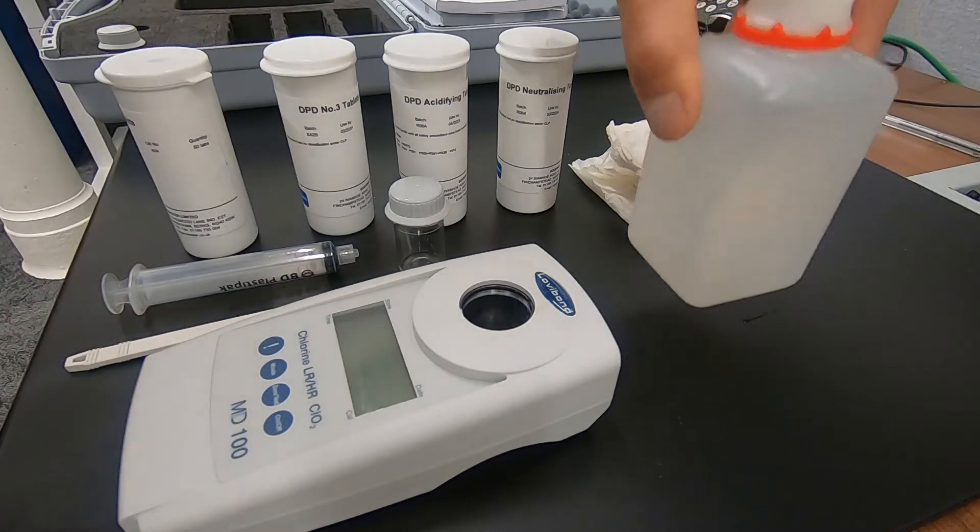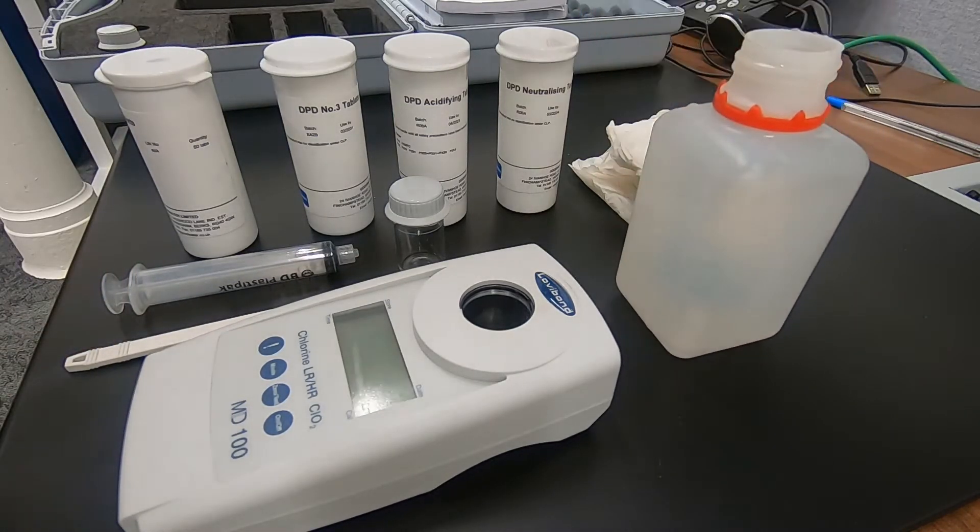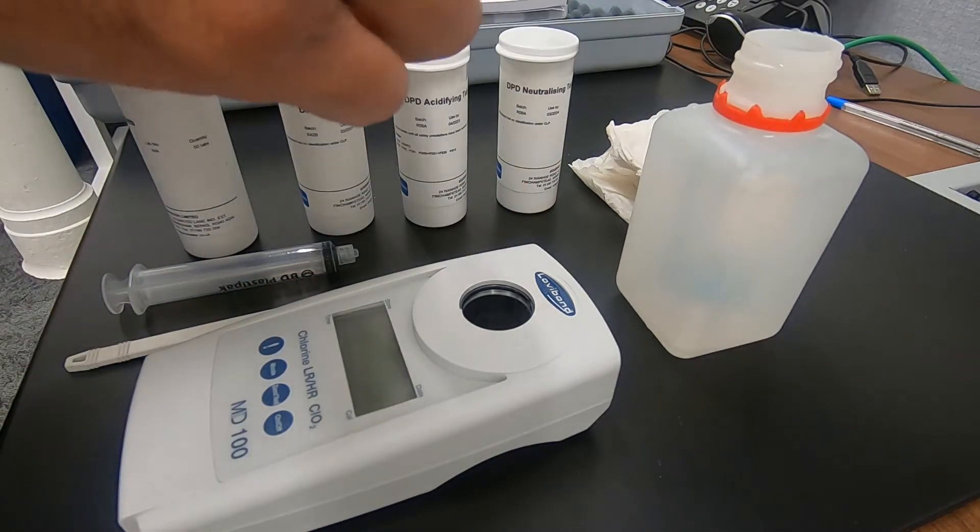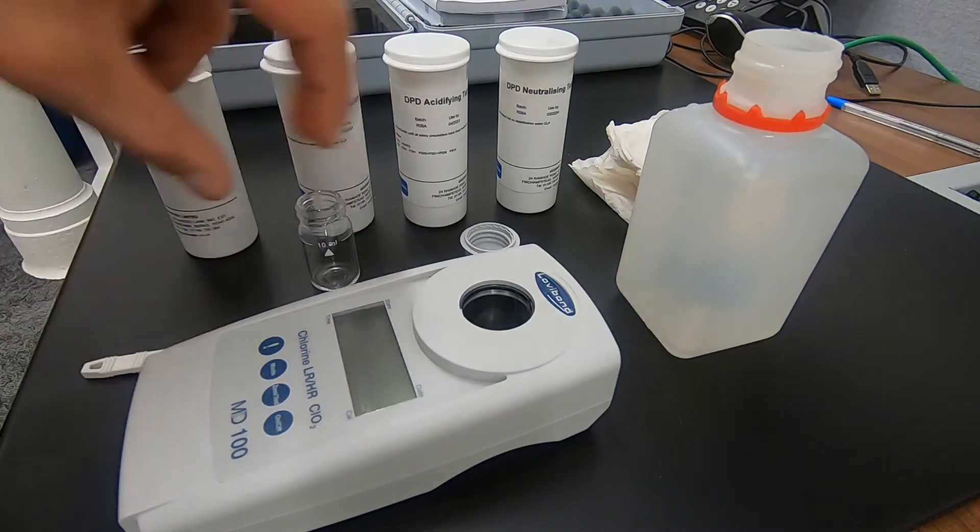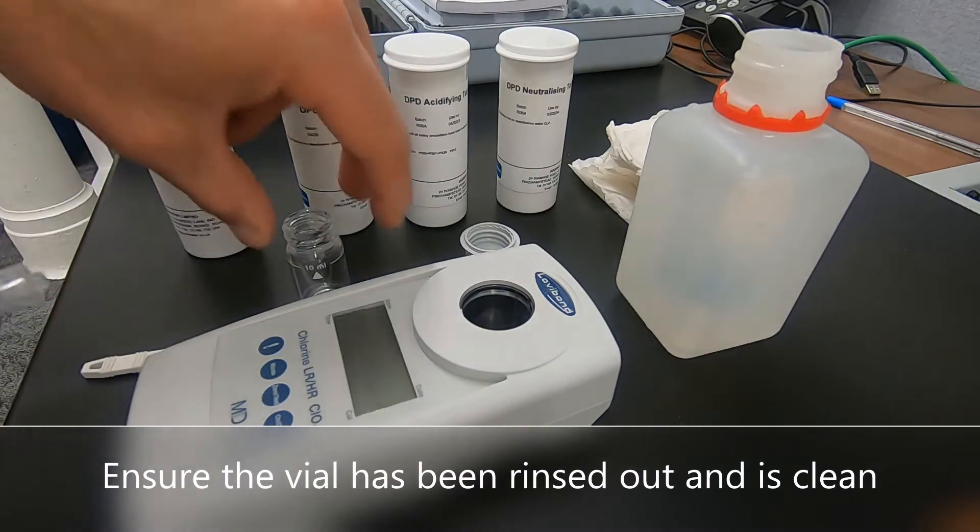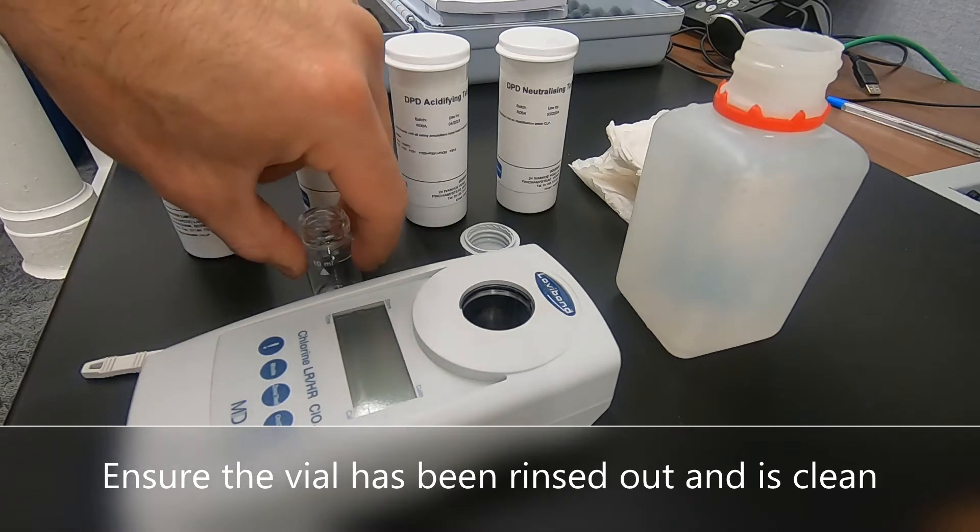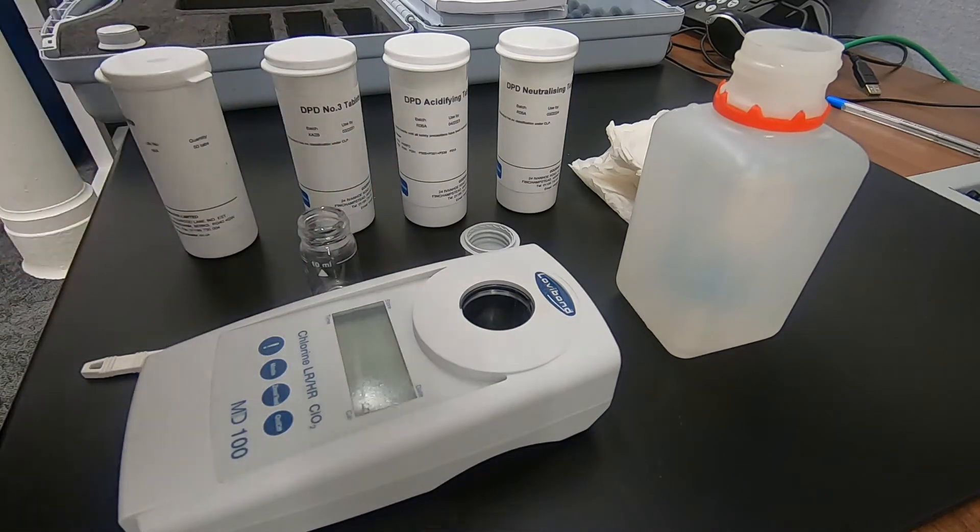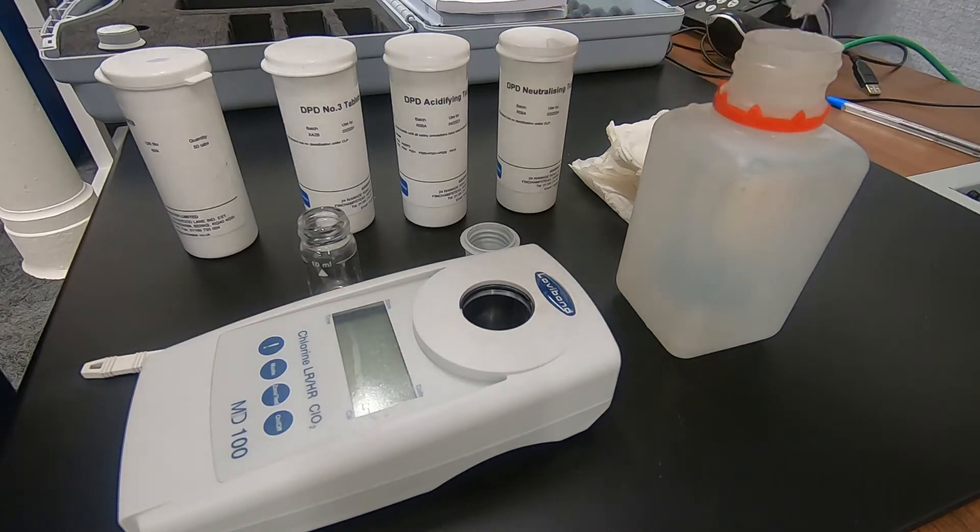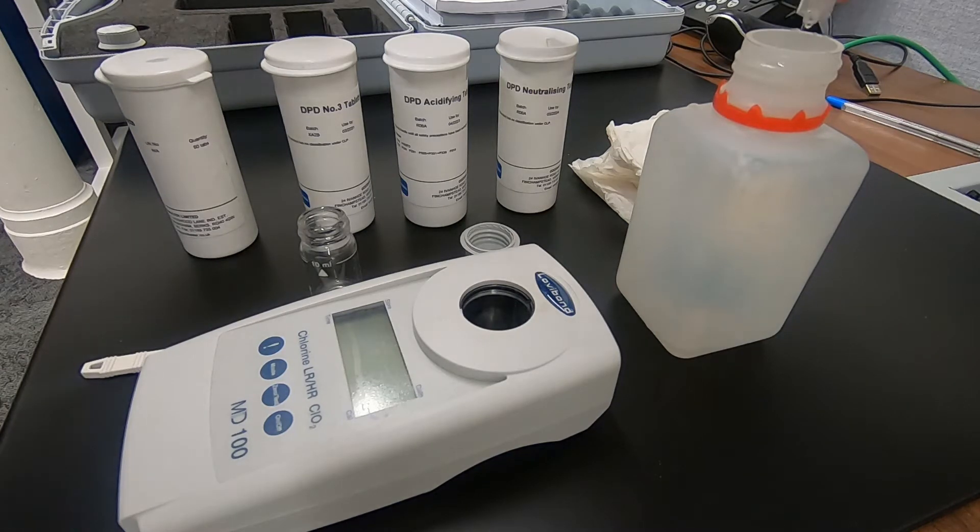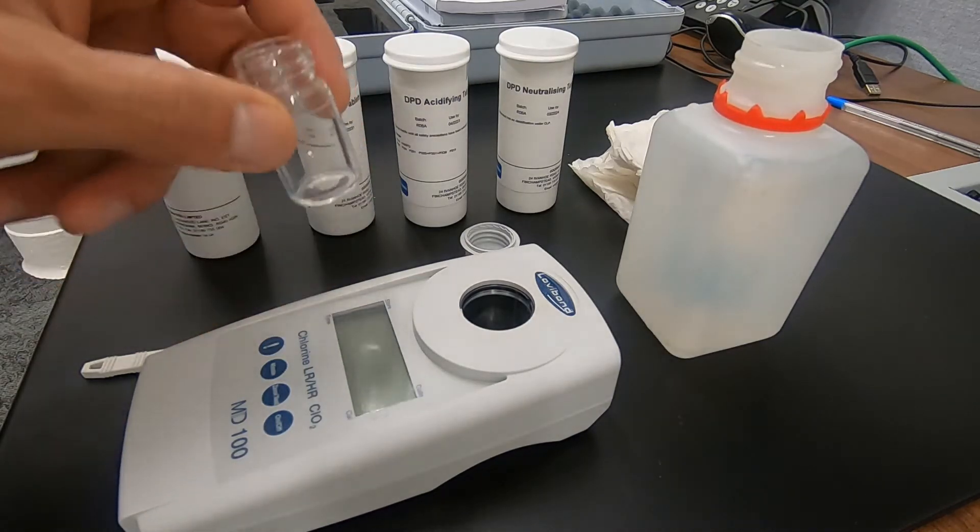So we've already got our sample of water here. First thing we do is take our 10 milliliter vial, make sure it's been cleaned thoroughly and rinsed from any previous tests before we start. Take a 10 milliliter sample of water using the syringe. Make sure that's 10 milliliters.